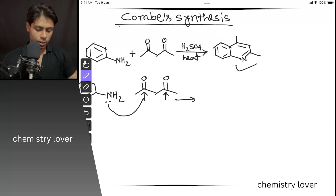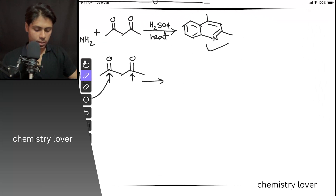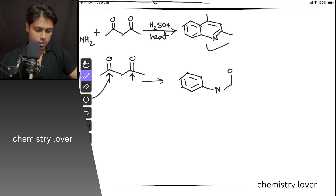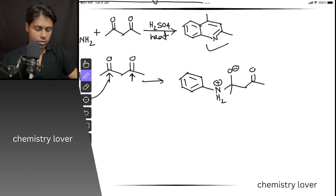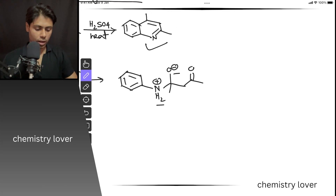So this nitrogen lone pair will attack on the electrophilic center. After this attack, you are going to get this adduct. Here you have an O minus, and here you have NH2 plus. Now a simple proton exchange occurs between these centers — the proton migrates from this center to this center, and you are going to get the next intermediate.